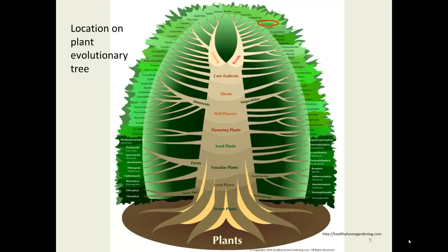Here we are on our plant evolutionary tree. One of these days we'll be seeing things not up in the asterids or rosids, but this is up on the rosids section of the tree.